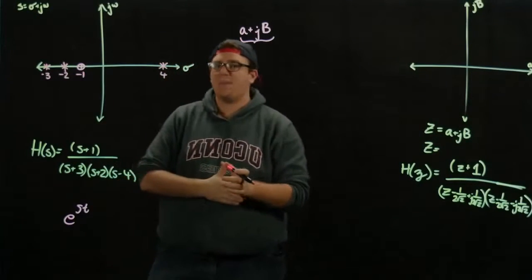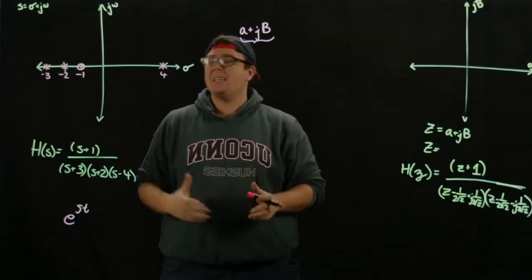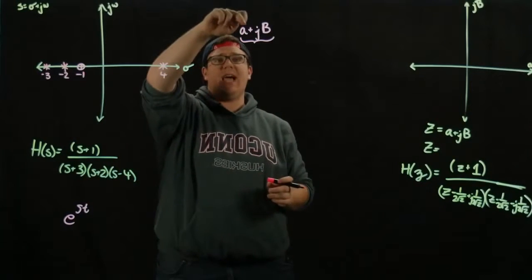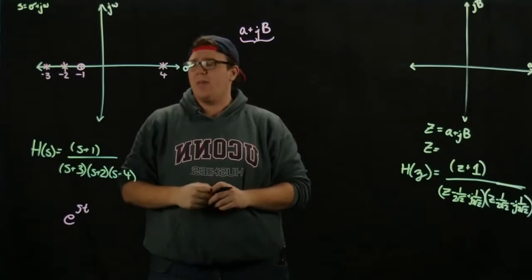So how can we tell if this is stable or not? Well, the simple answer is if any of the poles have a real part, so if its A part is positive, then it's unstable.